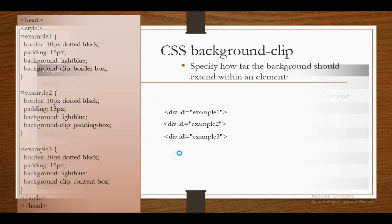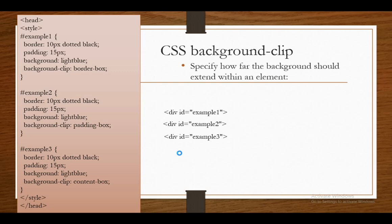Now first we are going to see about background-clip. The background-clip property defines how far the background color or image should extend within an element. It specifies how far the background should extend within an element. We have three examples — three types: border-box, padding, and content-box. You can try by yourself or wait for my notepad explanation. Here we have written the ID attribute using hashtag example1 and hashtag example2 in the div element.